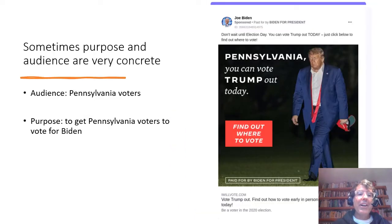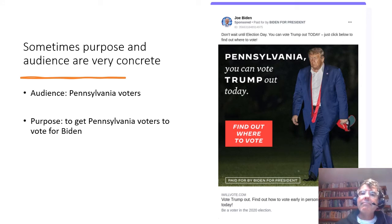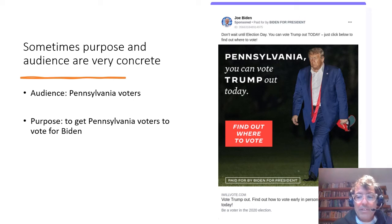Sometimes purpose and audience are very concrete and specific, and you really can tell exactly what it is. So look at this campaign ad from Biden. Here the purpose is really clear, and the audience is really clear too — the audience is voters in Pennsylvania. The purpose is to get Pennsylvania voters to vote for Biden and get Trump out of office. So sometimes purpose and audience are pretty clear given the context.